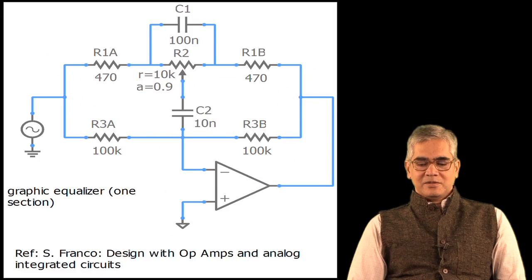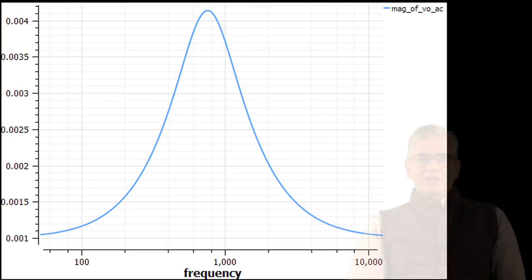After that we will take up op-amp circuits. First we will discuss op-amp circuits in which the op-amp works in the linear region, for example, inverting and non-inverting amplifiers, integrator, difference amplifier, instrumentation amplifier, filters, etcetera. We will then consider op-amp circuits involving positive feedback, in particular the Schmitt trigger and its applications.